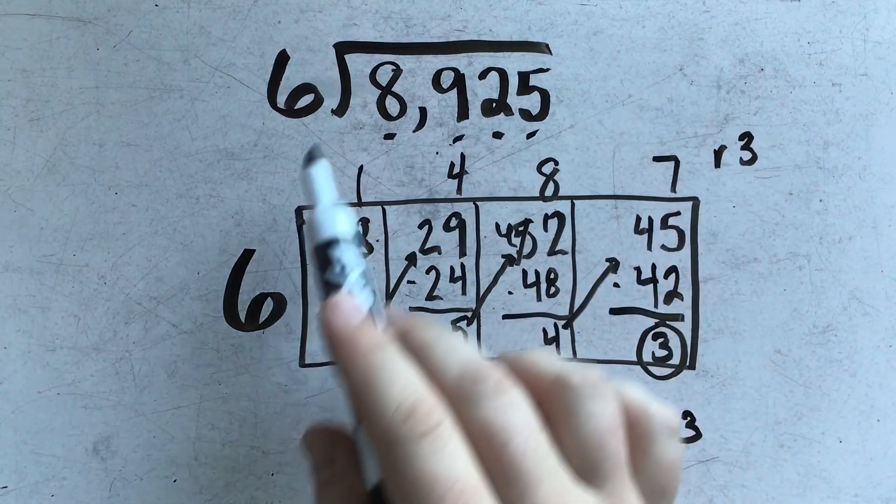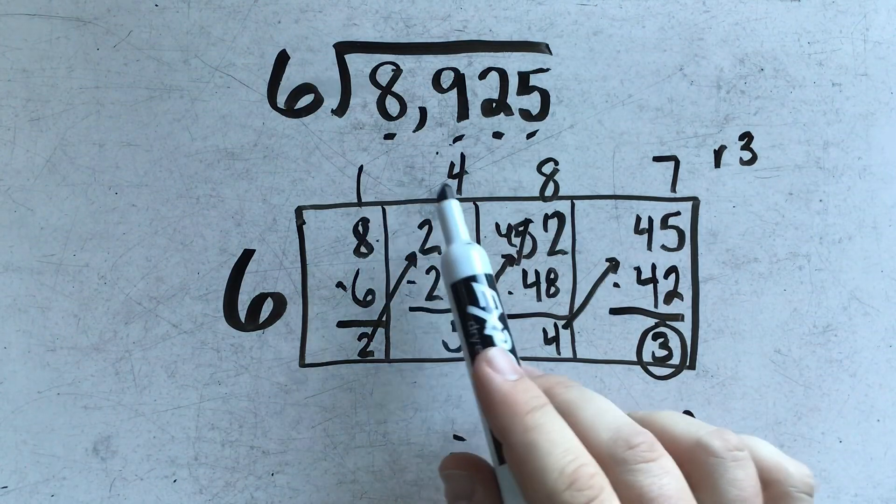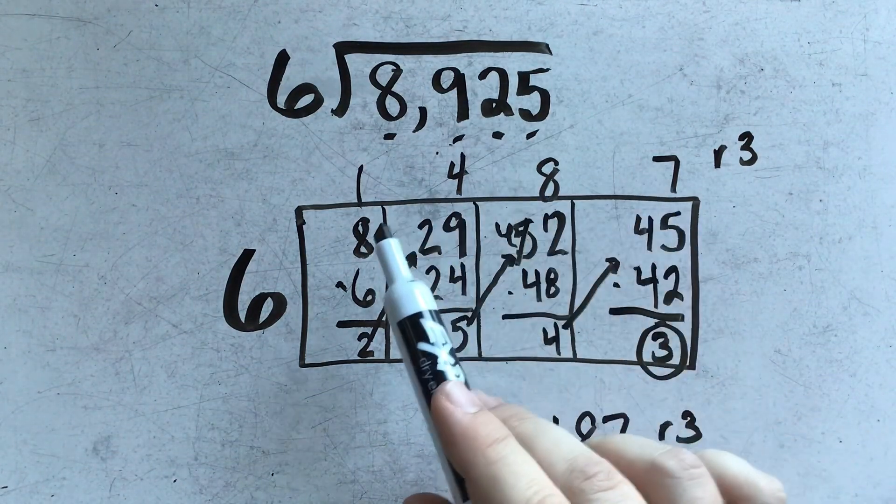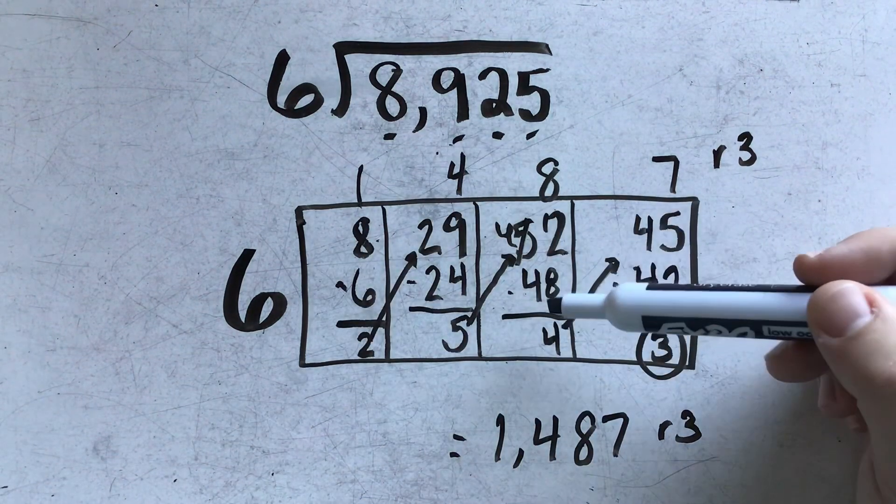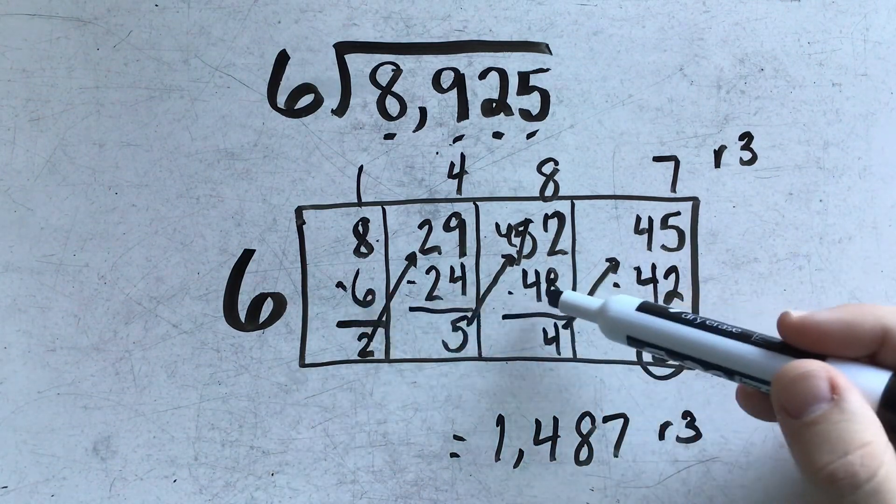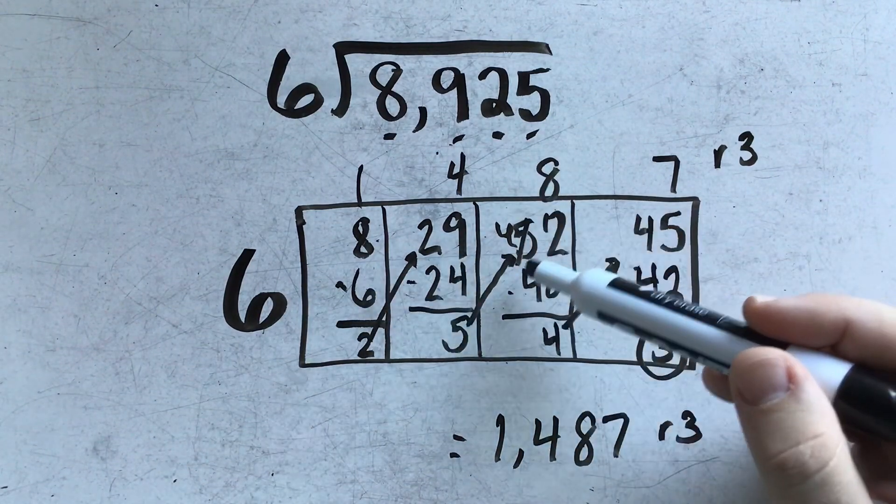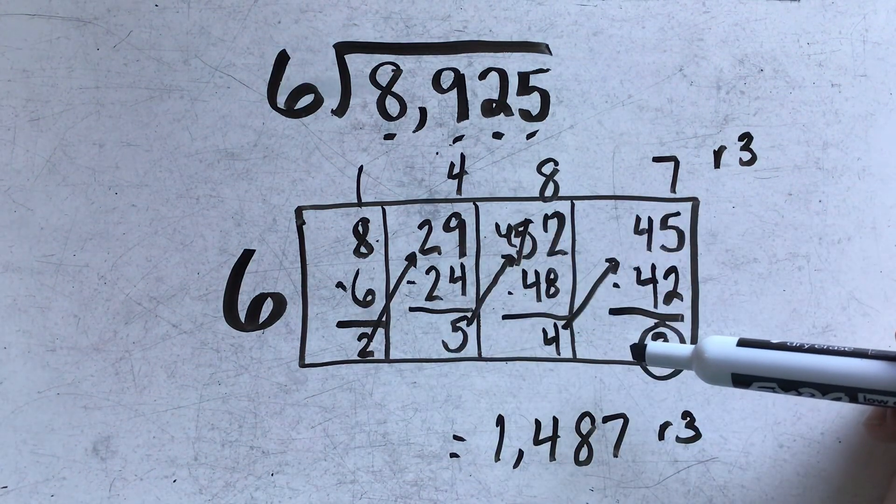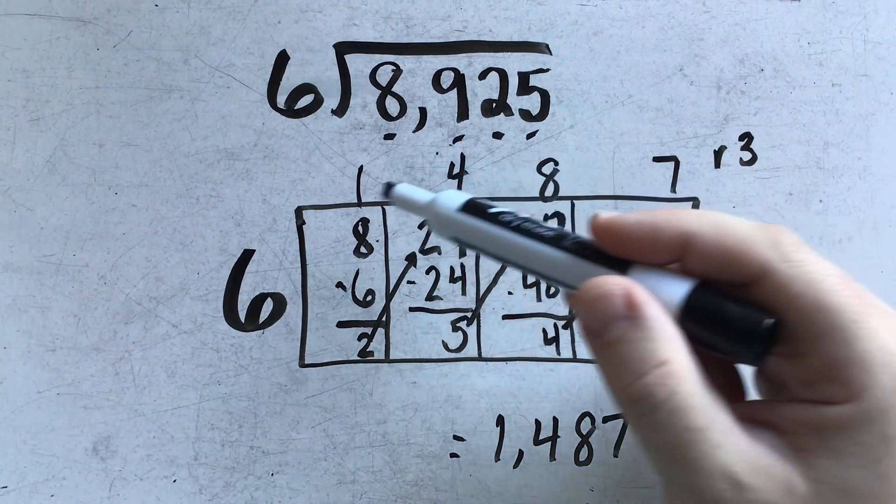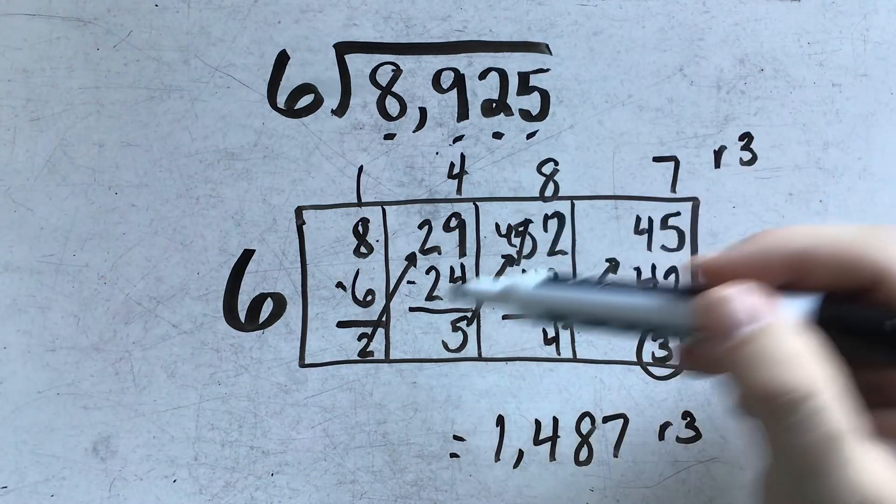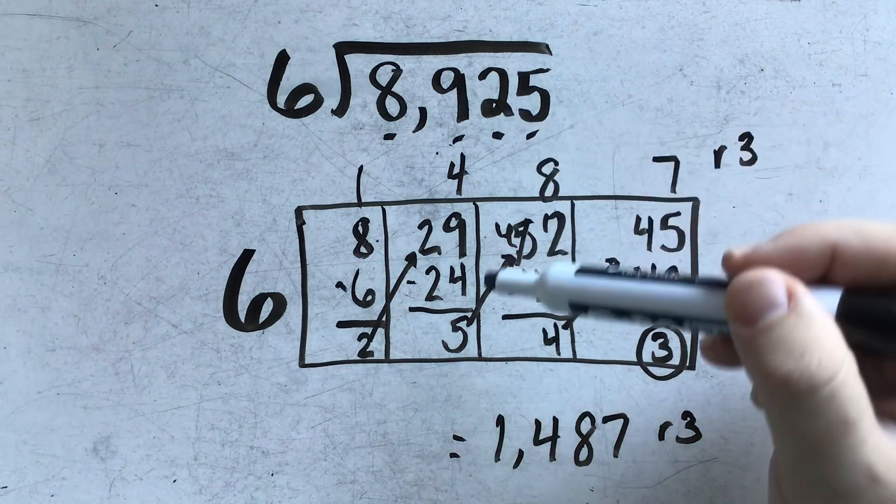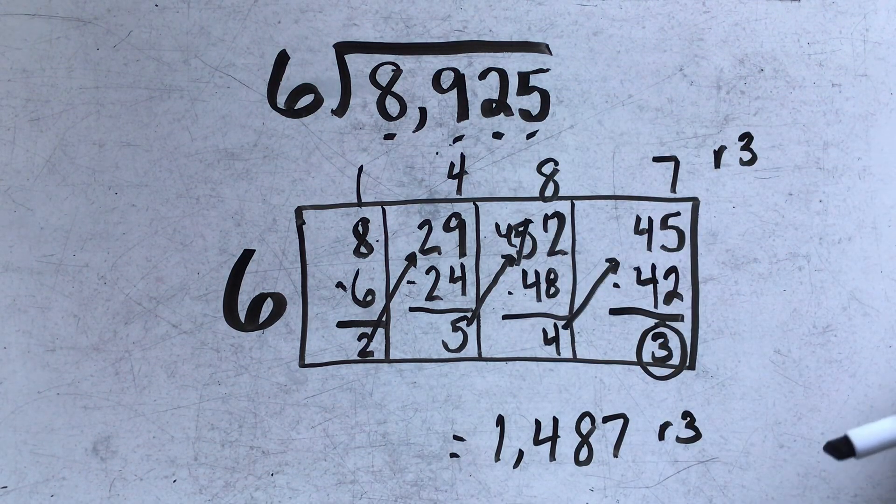A couple other pros to this method is that if you forget to put a number in the boxes up top, it's very easy to see what we multiplied 6 by to get that answer up there. So if there's ever a point where we forget to put a number up, we don't have to try and scramble to find where that work came later in the problem.